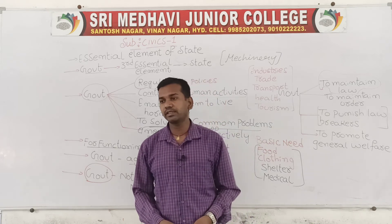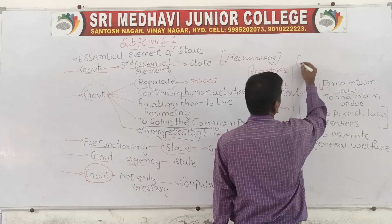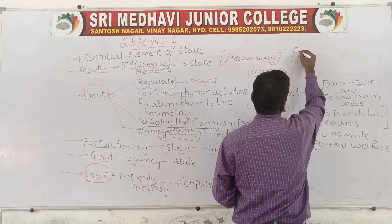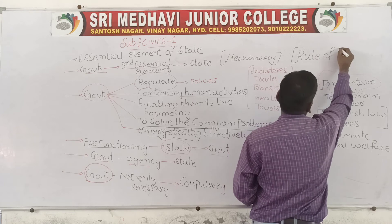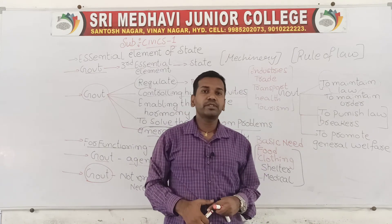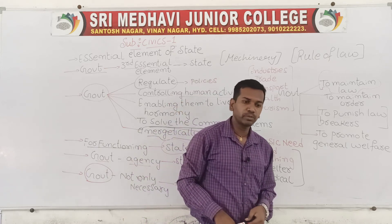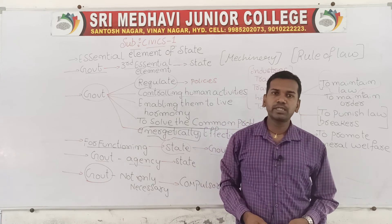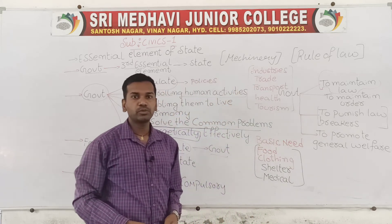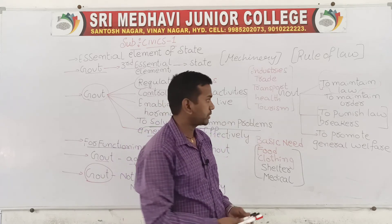In every democratic country all people are equal in front of the law - this is called rule of law. When all people are equal in front of the law, everybody must follow and obey the law. When people are not obeying the law, the government mechanism should force and punish them strictly, so that law breakers who are breaking the law receive strict punishment.